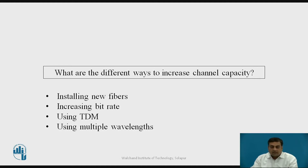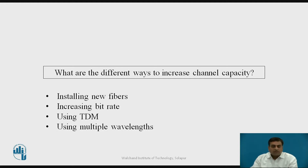Another way to increase channel capacity is by increasing the bit rate. Up to a certain limit the bit rate could be increased, but beyond that limit we need very fast operating optical switches, optical sources, and detectors. So it is also not a good way. Channel capacity could also be increased using time division multiplexing.